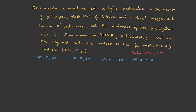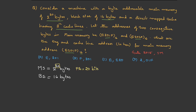Next question: consider a machine with a byte-addressable main memory of 2^20 bytes, block size of 16 bytes, and a direct mapped cache having 2^12 cache lines. Given a memory address e201f (hexadecimal), find the tag and cache line address. Memory size is 2^20 bytes, so physical address (PA) is 20 bits. Block size is 16 bytes = 2^4 bytes, so 4 bits for block offset. Number of cache lines is 2^12, so cache index (CI) is 12 bits.